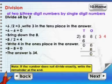Division of 2 and 3 digit numbers by single digit numbers. Divide 68 by 2.